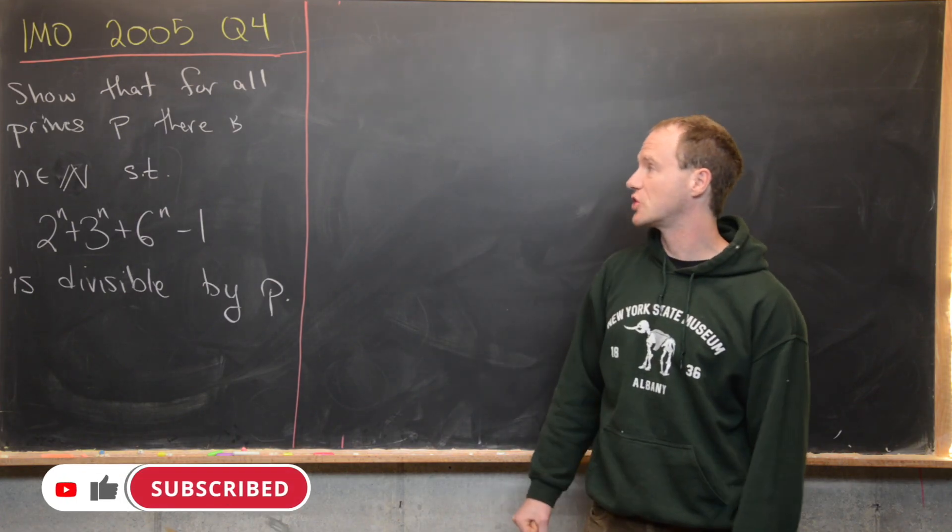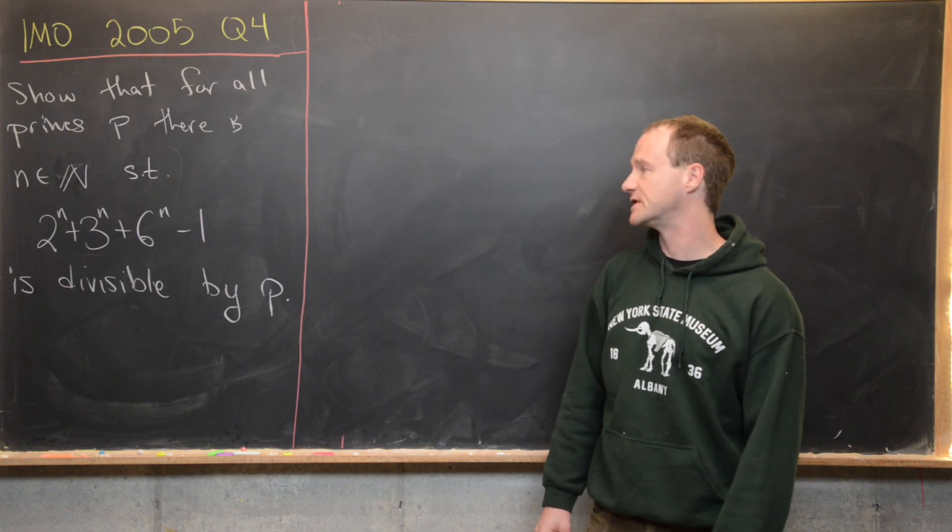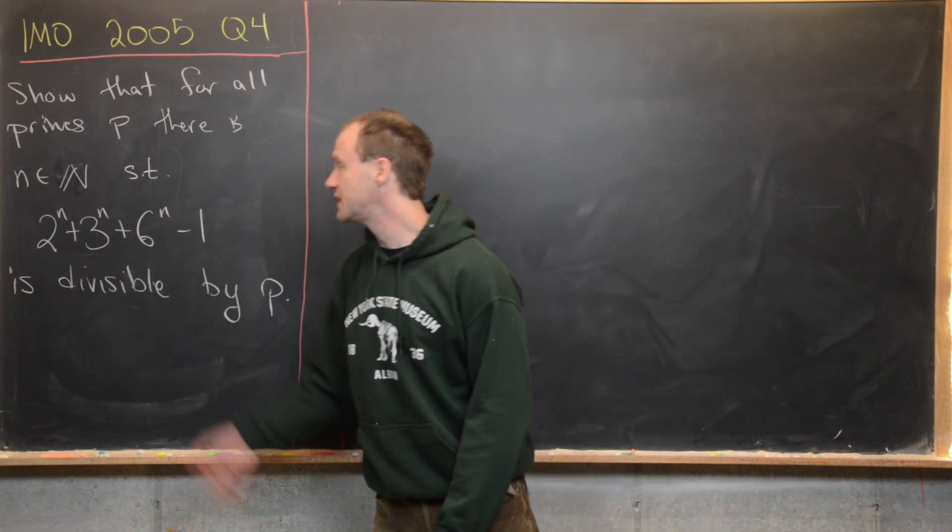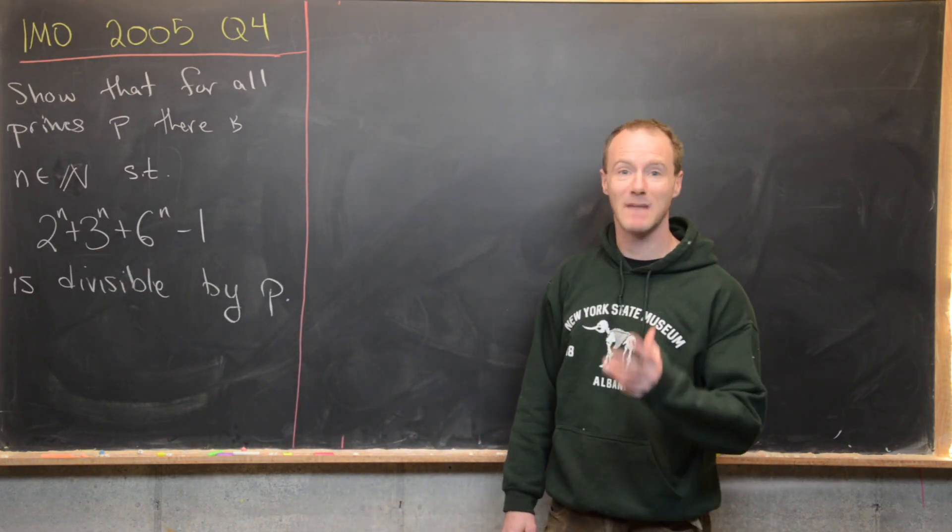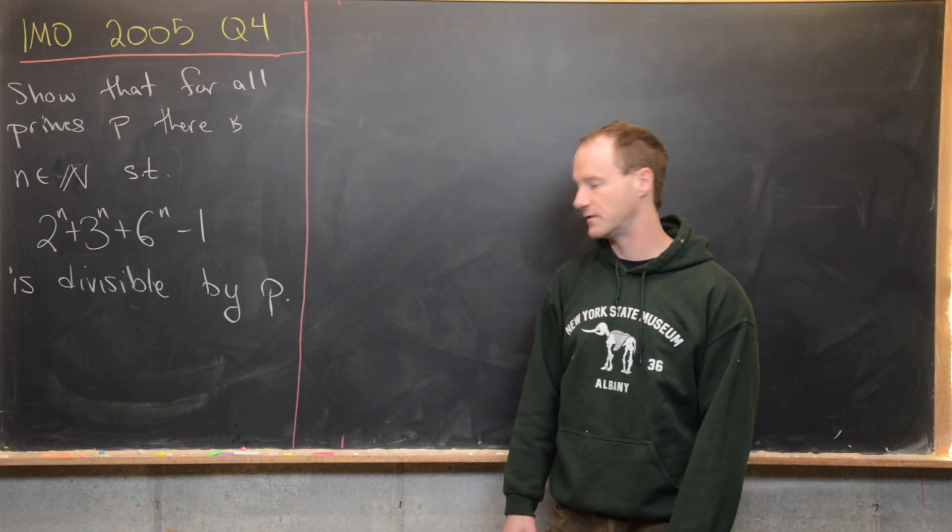Our goal is to show that for all primes p there is a natural number n, a positive integer, such that 2^n + 3^n + 6^n - 1 is divisible by p. In other words, it's a multiple of p.